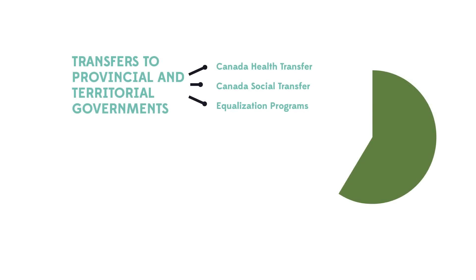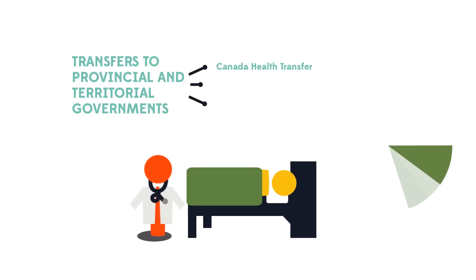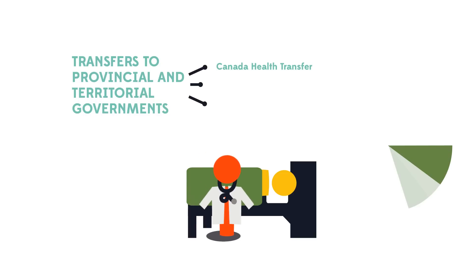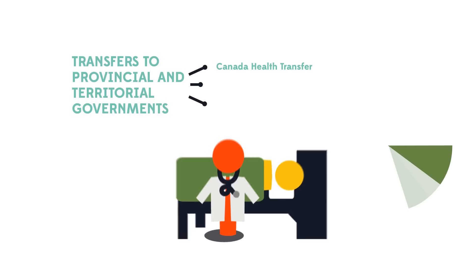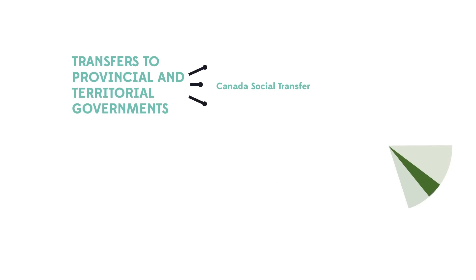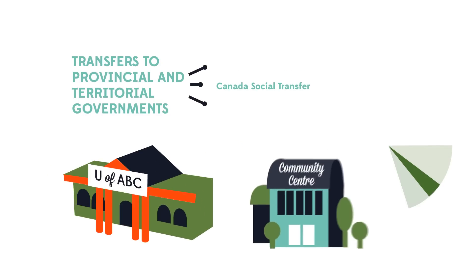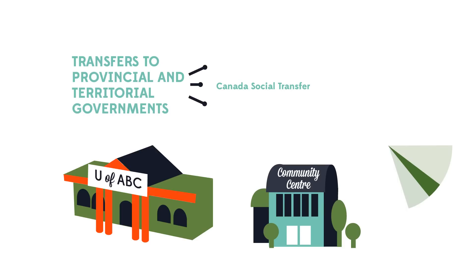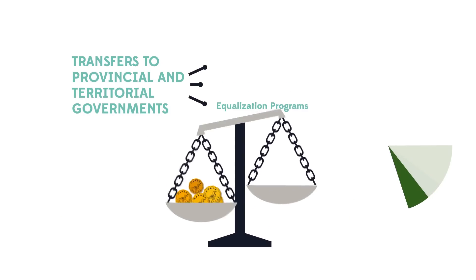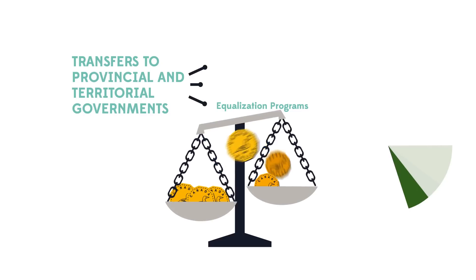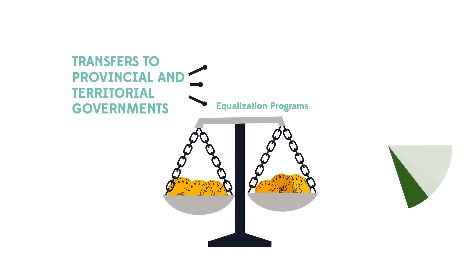The next set of transfers is to provincial and territorial governments. These make up about 20% of the budget and include the Canada Health Transfer, which provides long-term funding for health programs; the Canada Social Transfer, which supports post-secondary education, social programs, and services for children; and equalization programs, which address economic disparities between provinces.